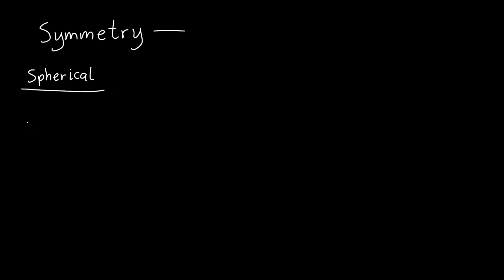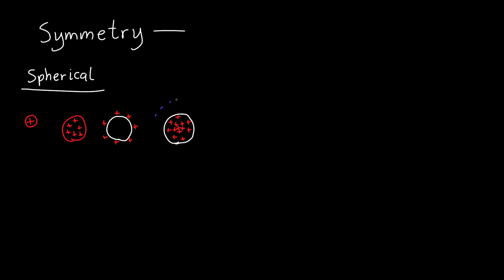Examples of spherical symmetry include a point charge, a sphere of charge, a spherical shell with charge on its surface, or even something like a sphere with a non-uniform charge distribution — more charge at the center and less charge toward the edges.